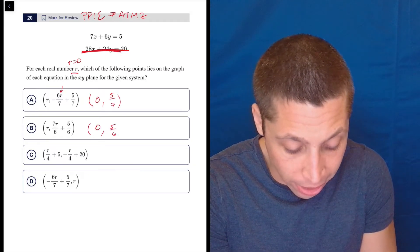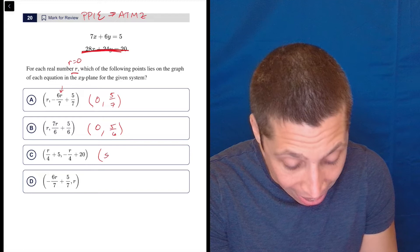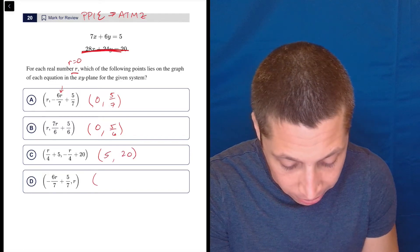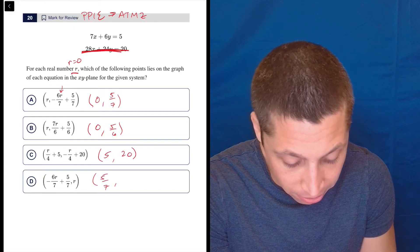This is 0, 5/6. This is 5, 20. And this is 5/7, 0.